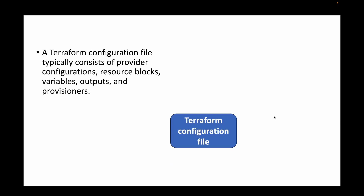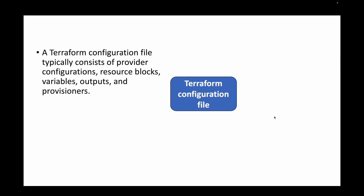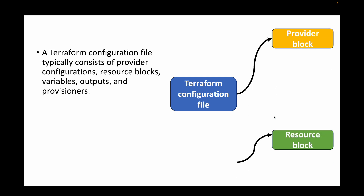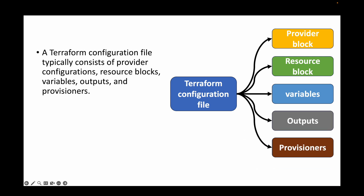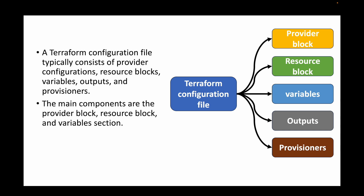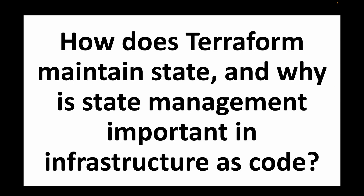The next question is: what are the key components of a Terraform configuration file? When we talk about Terraform configuration files, there are important components we generally write: the provider block, the resource block, variables, outputs, and provisioners. The main components are the provider block — where we specify the platform where we want to create the infrastructure — the resource block to create resources, and the variable block to declare all of our variables.